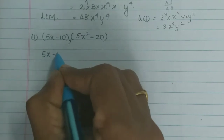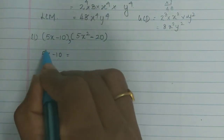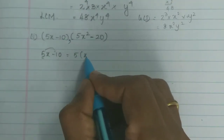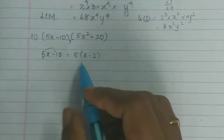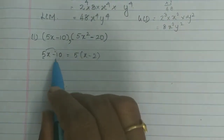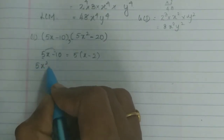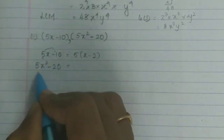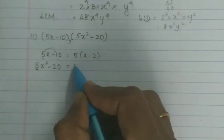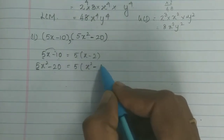In 5x - 10, we can take out 5 as common: 5 into (x - 2), since 5 × x = 5x and 5 × 2 = 10. For the second expression 5x² - 20, we factor out 5 to get 5(x² - 4).